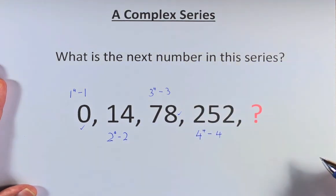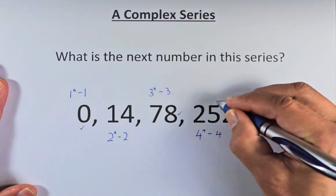4 to the power of 4 is 256. 256 minus 4 is 252.